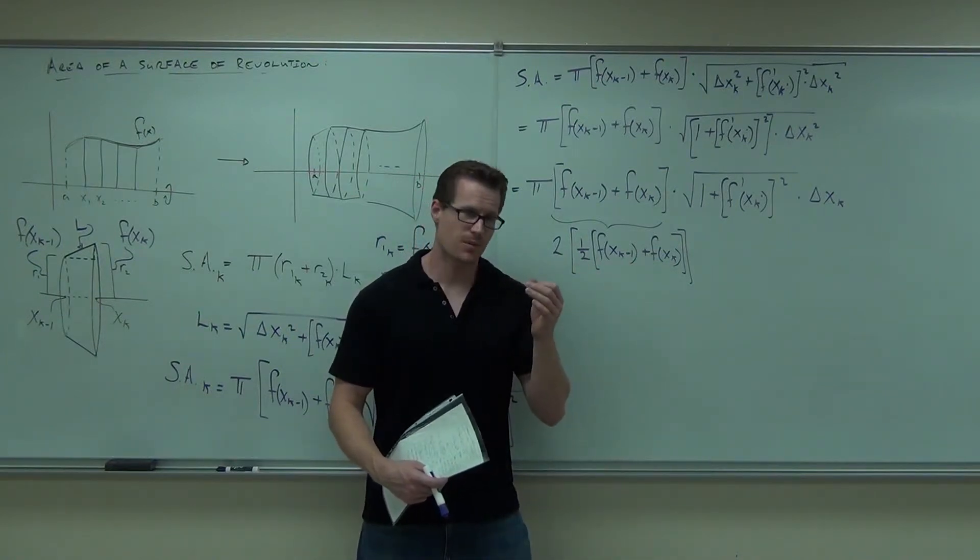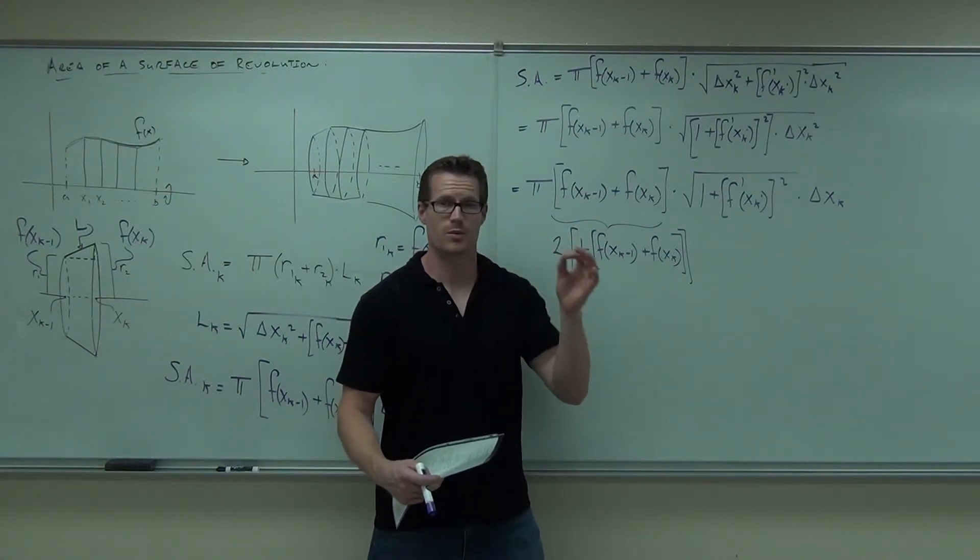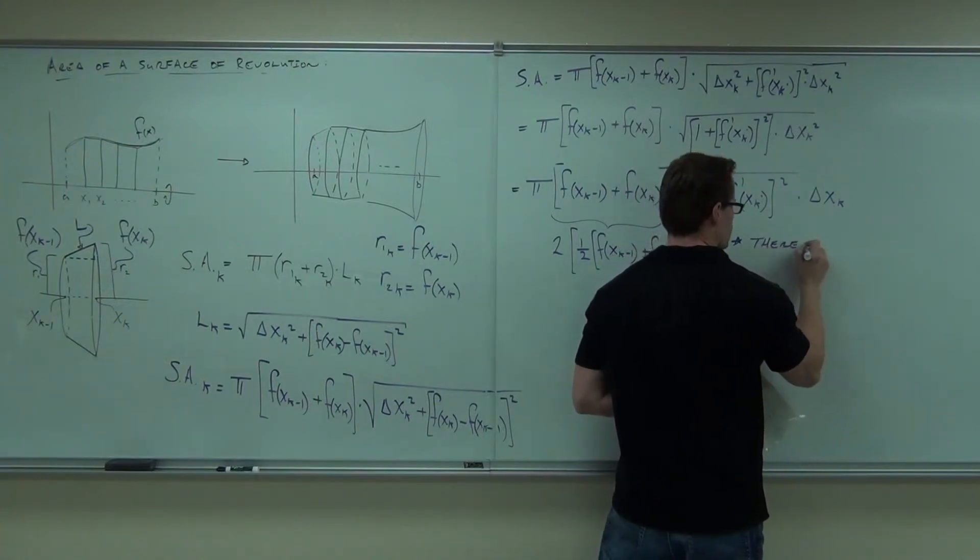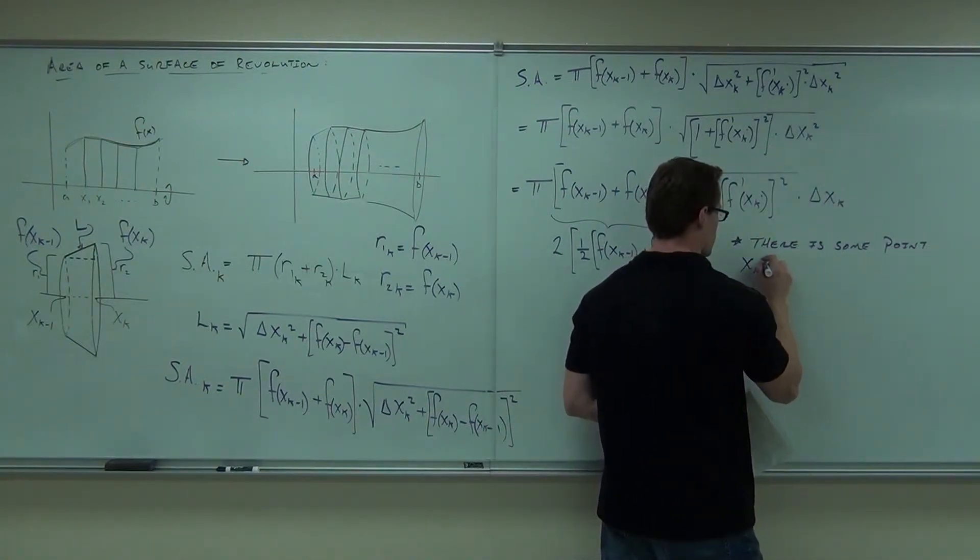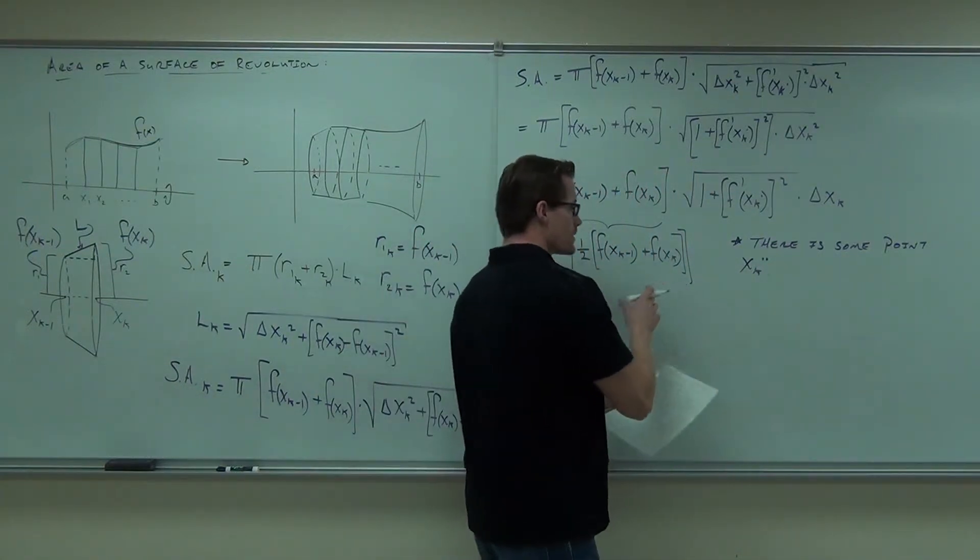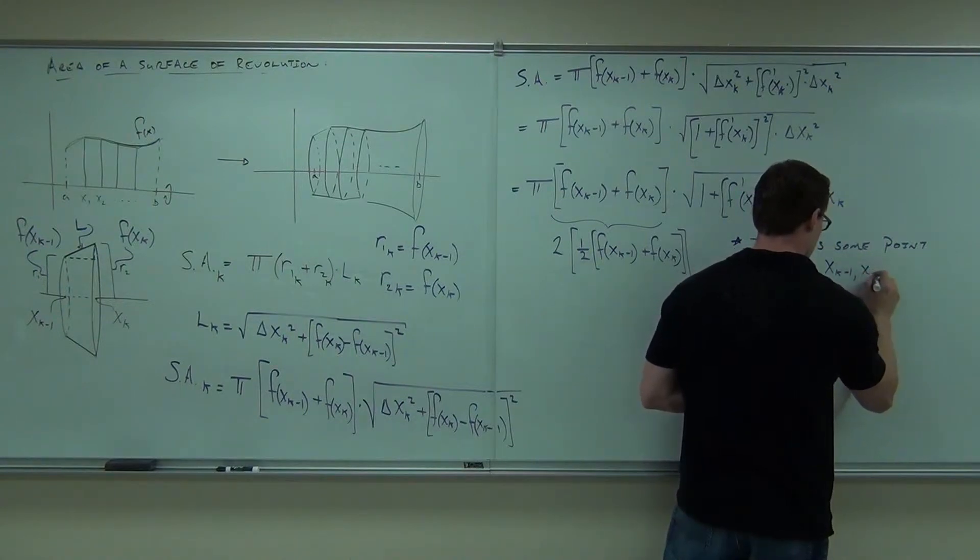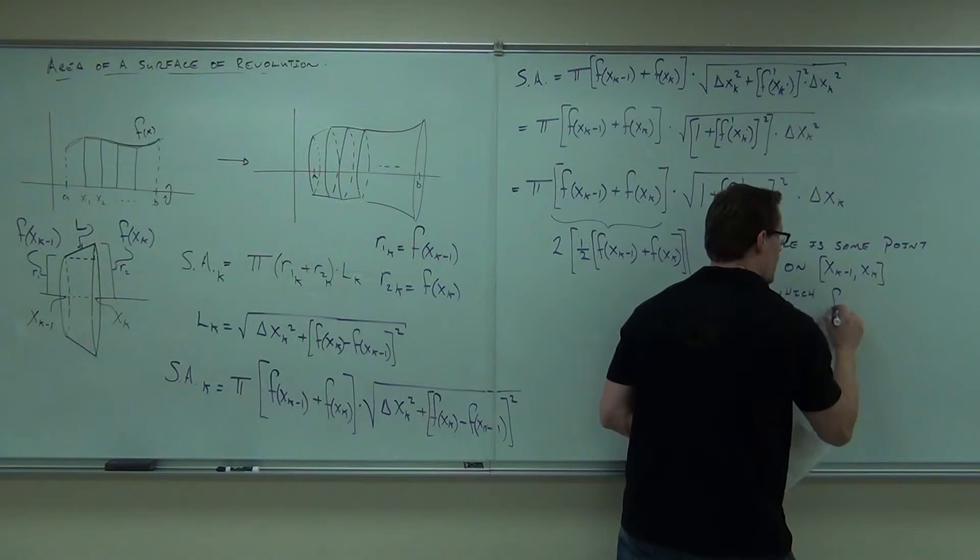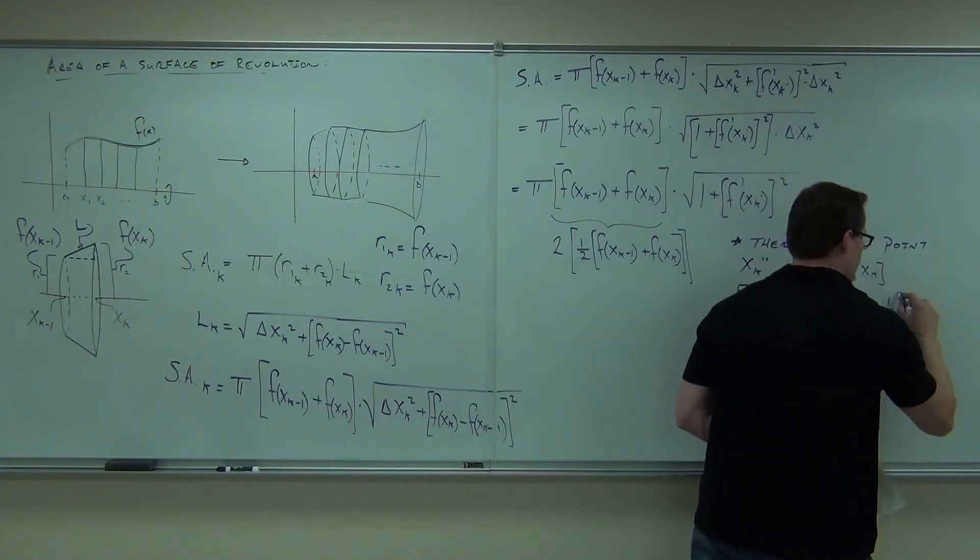Now, what I'm going to do is let another arbitrary point, we have an xk dot already. I'm going to choose xk dot dot to be that, I know it's weird, that other arbitrary point. So I'm going to say there's some point, I'll explain it, there is some point, xk dot dot, on this interval for which f of xk double dot equals 1 half, equals the average, basically, the average height.